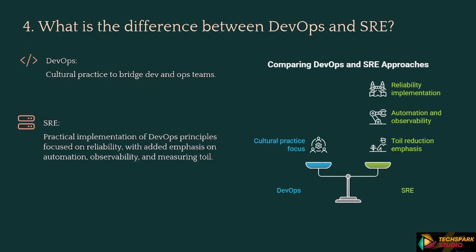Next: What is the difference between DevOps and SRE? Response: DevOps — a cultural practice to bridge Dev and Ops teams. SRE — a practical implementation of DevOps principles focused on reliability, with added emphasis on automation, observability, and measuring toil.